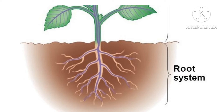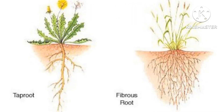The root is the part of the plant that grows below the ground. There are two types of roots: the first one is taproot and the second one is fibrous root.